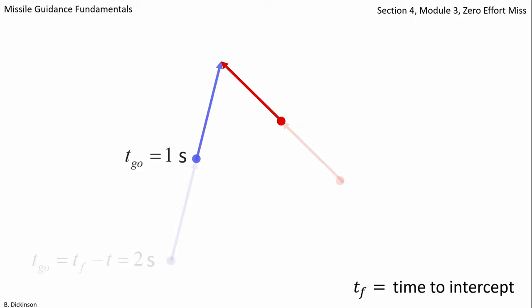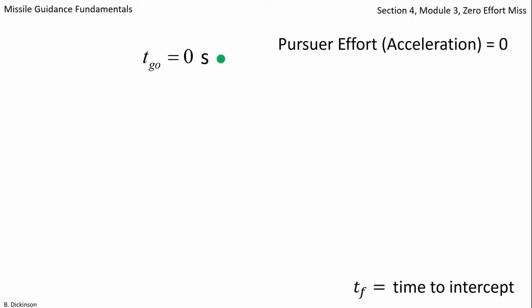And then one second later, and finally one second later the bodies collide. The pursuer did not maneuver throughout, so its effort or its acceleration was zero.